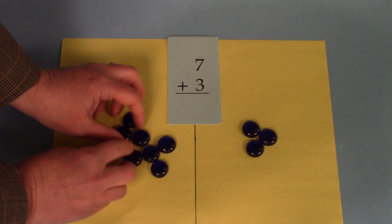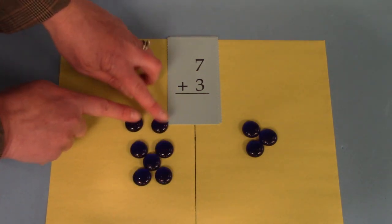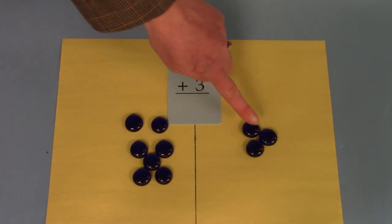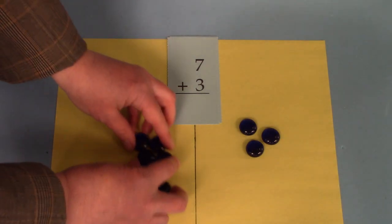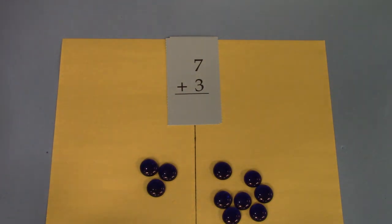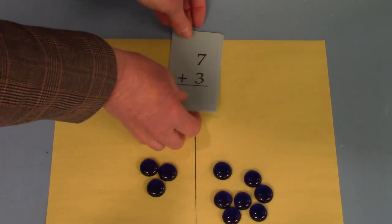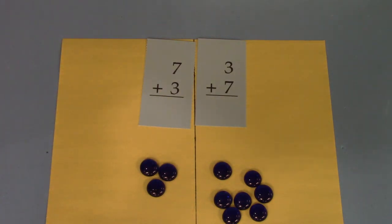Let's make sure that's true. One, two, three, four, five, six, seven, eight, nine, ten. It's still ten. Just because I move them from one side to the other does not change the amount of gems that we have. Three plus seven and seven plus three both equal ten.